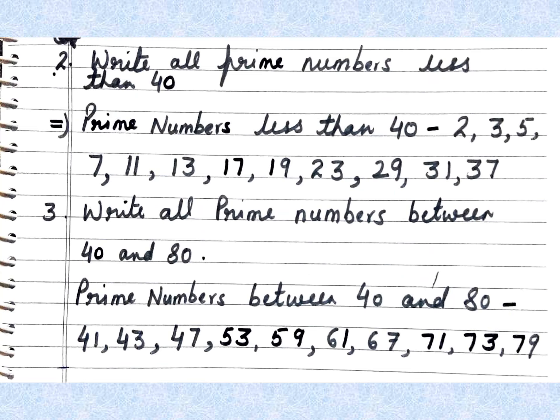Now question 2: write all prime numbers less than 40. Starting from 1, which is excluded, the prime numbers less than 40 are: 2, 3, 5, 7, 11, 13, 17, 19, 23, 29, 31, and 37.